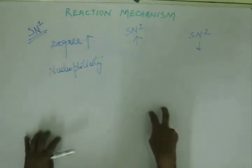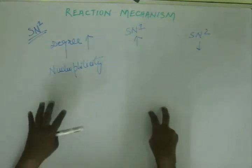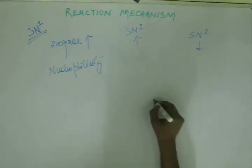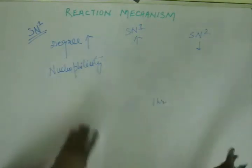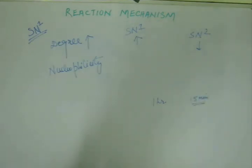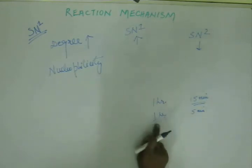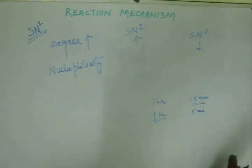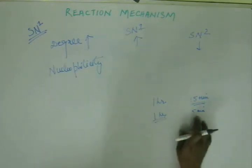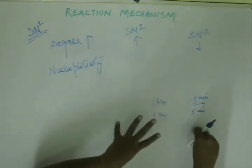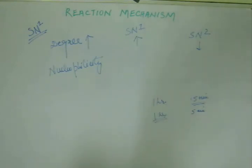The RDS decides the rate of reaction. If something is not present in the RDS, the step in which it appears is obviously faster than the RDS. Say the RDS takes one hour and the step containing the nucleophile takes fifteen minutes. If you increase nucleophilicity, that step may drop to five minutes — but the RDS still takes one hour. So increasing or decreasing nucleophilicity does not alter the time of the RDS, and the overall rate remains governed by that one hour.